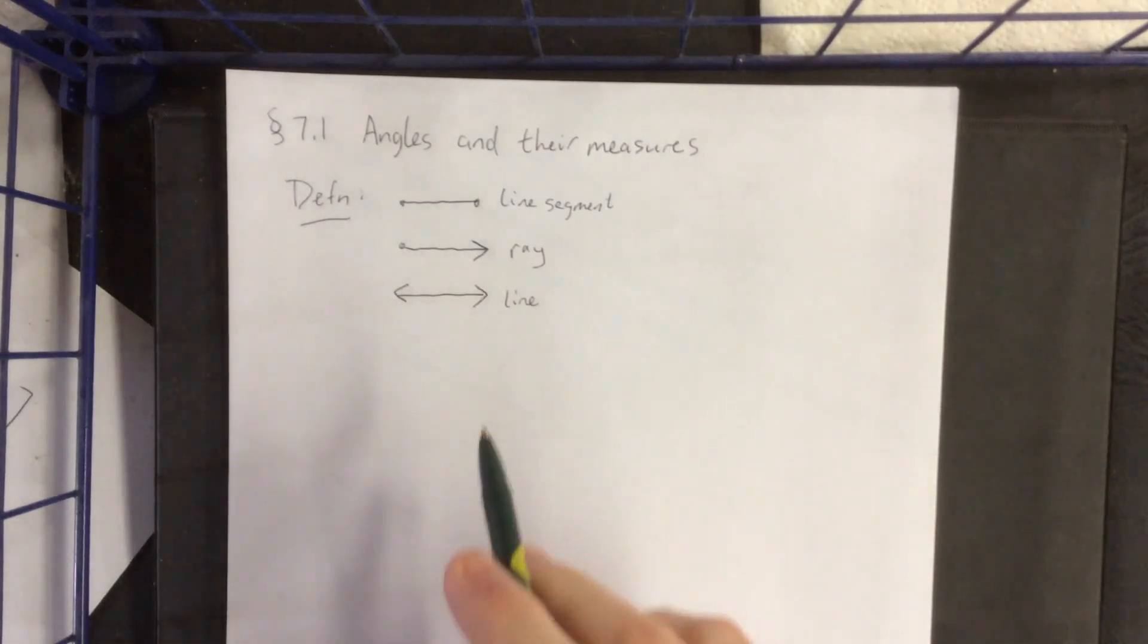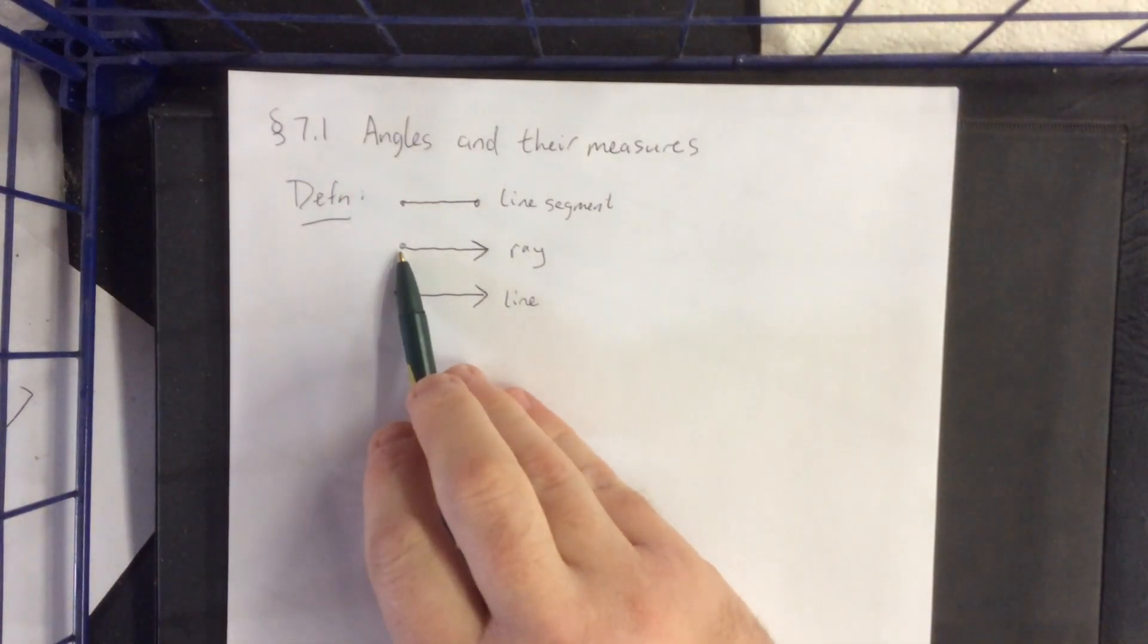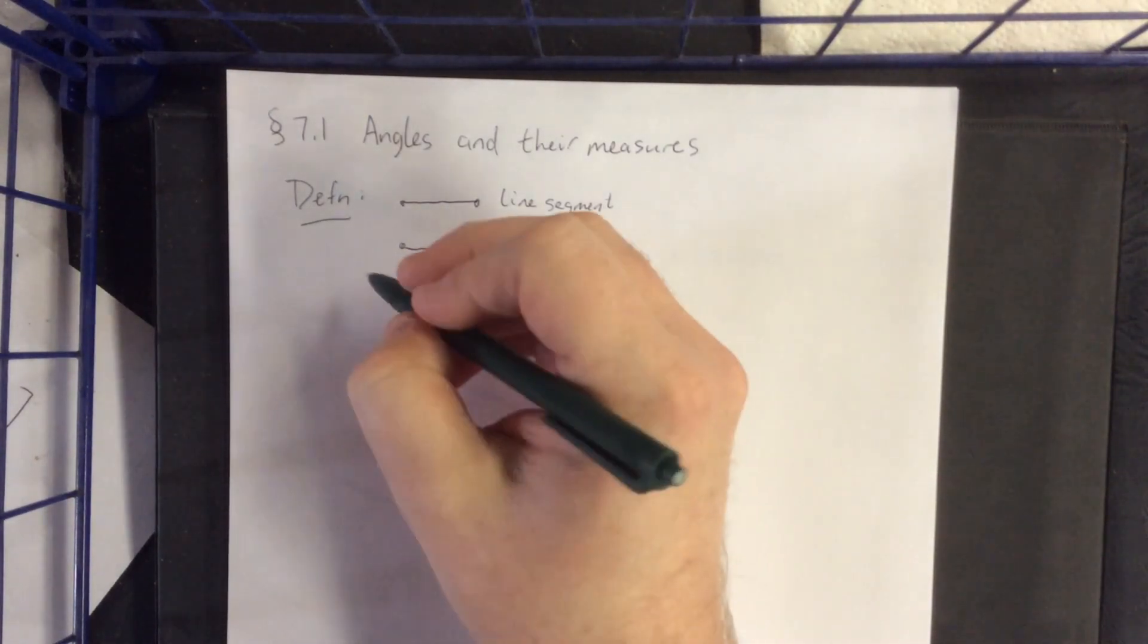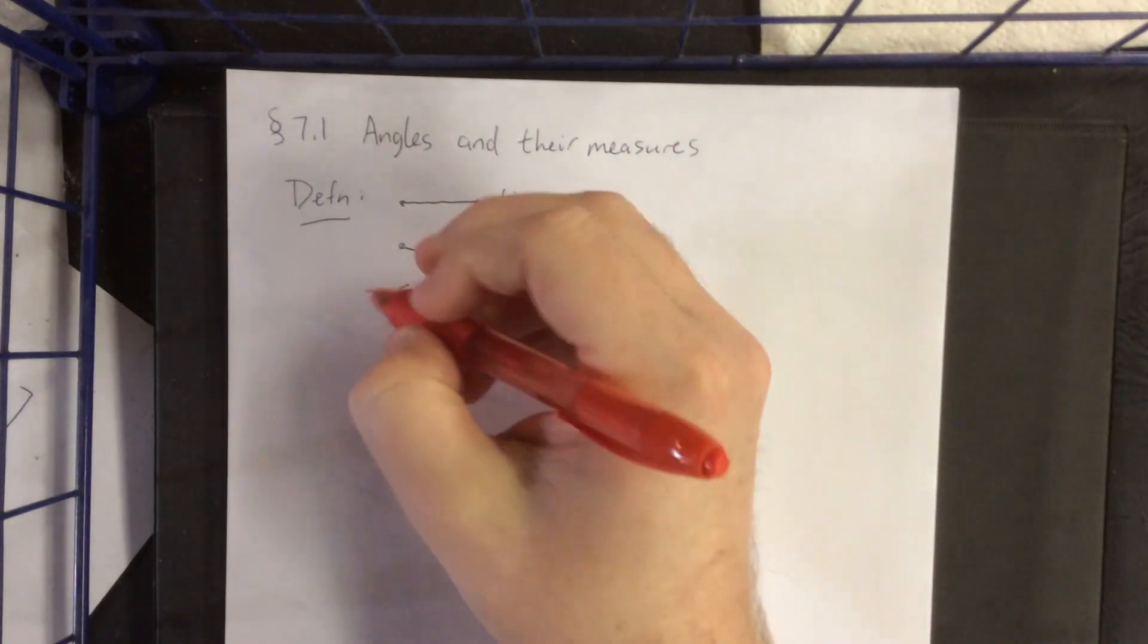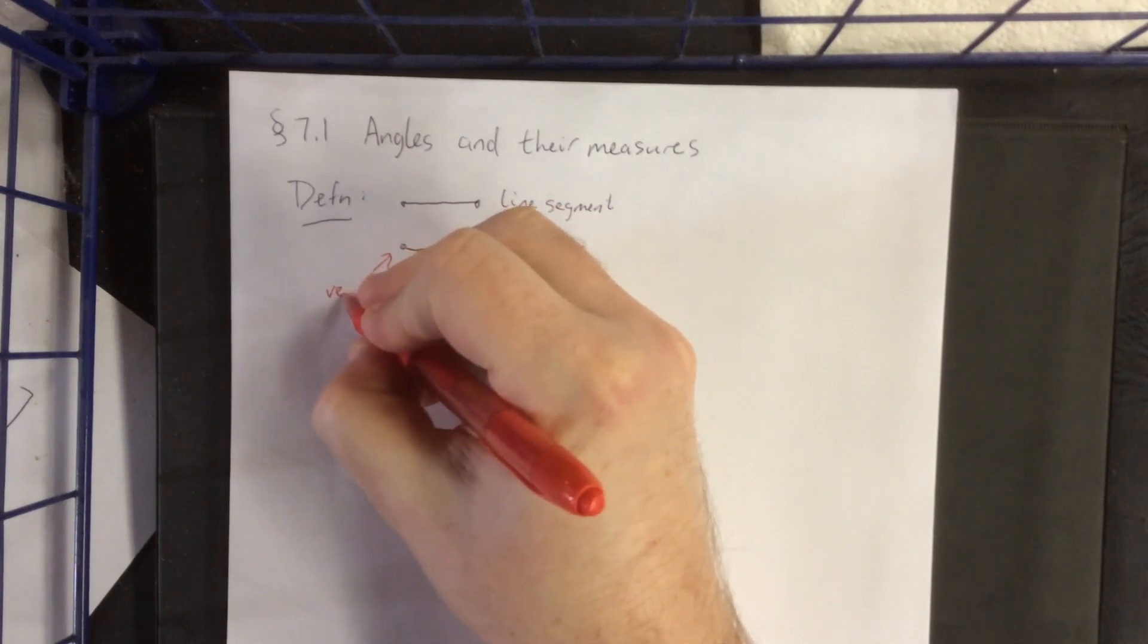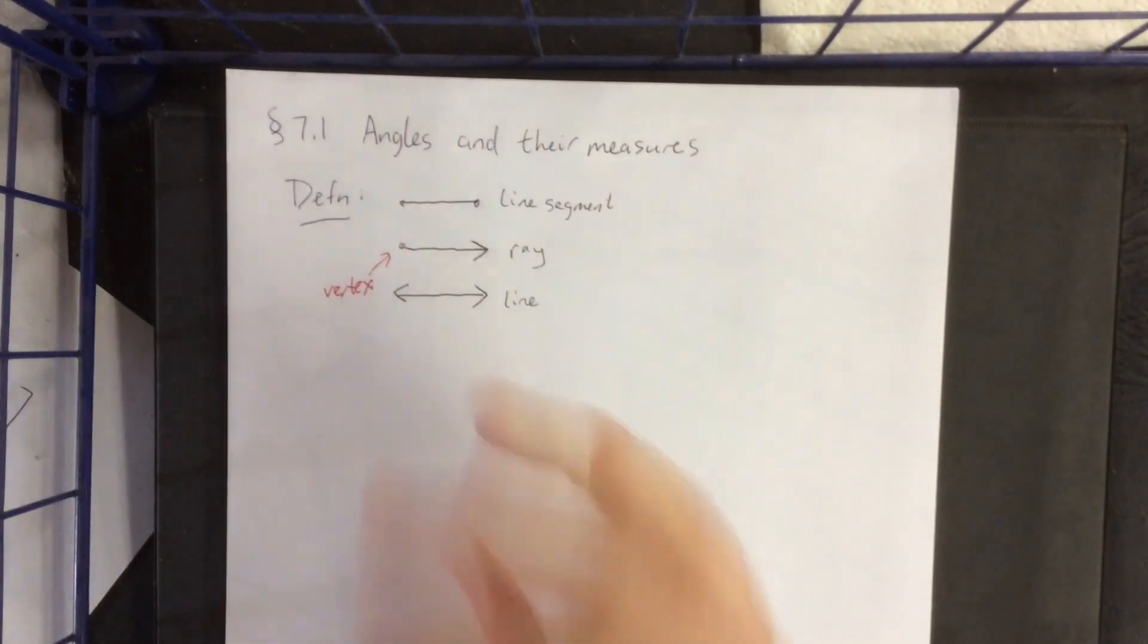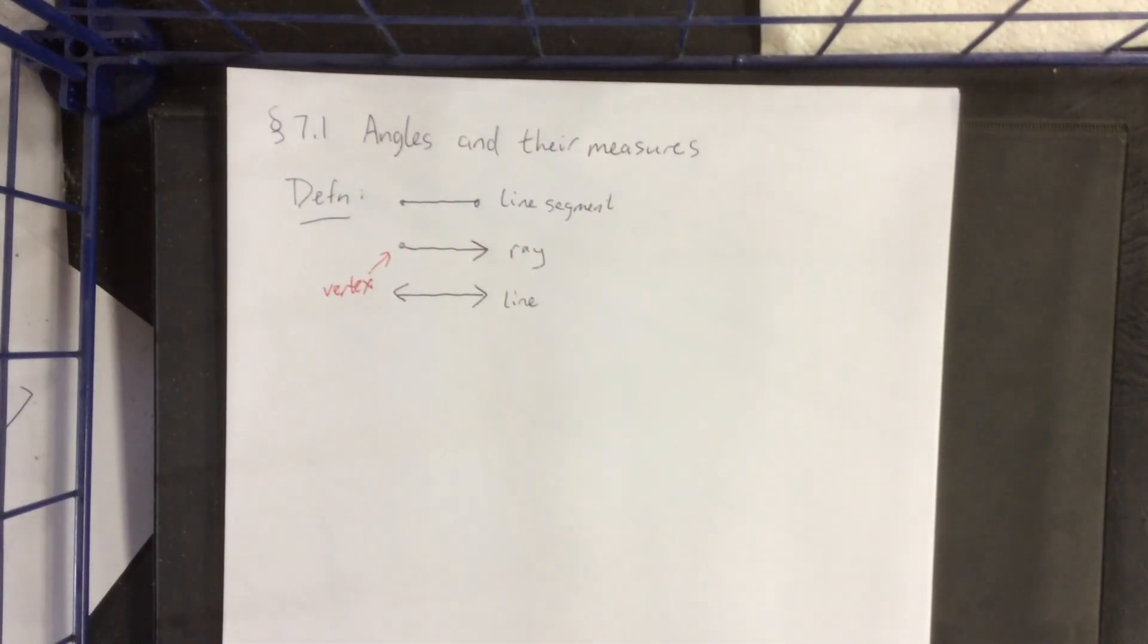Now, a ray is the only one of these three objects that isn't symmetric in some sort of nature. The ray has a finite stop on one side and it continues to infinity on the other side. It is for that purpose that we're going to give a special name to this side. And that side of the ray is going to be referred to as the vertex of the ray.